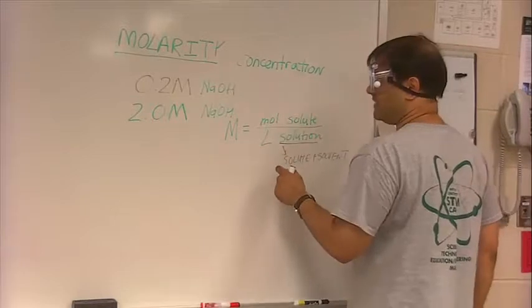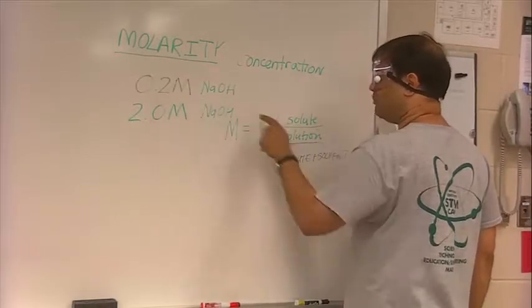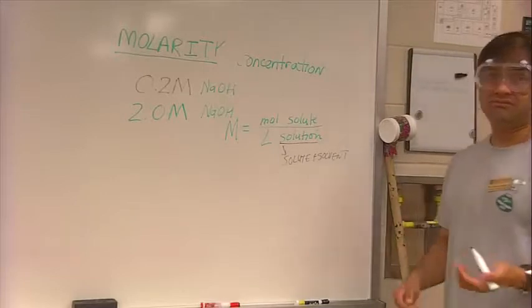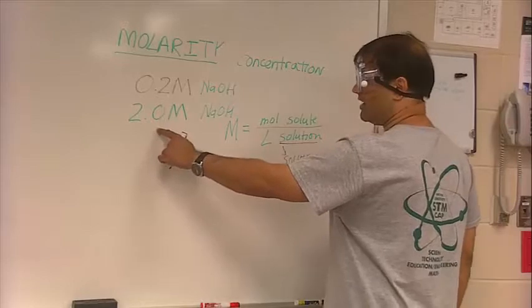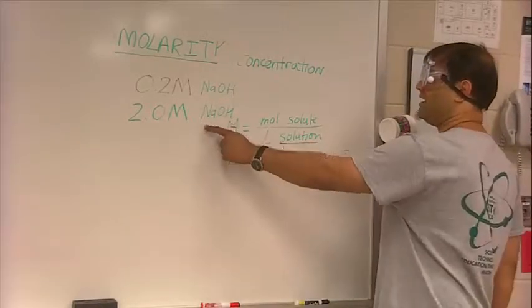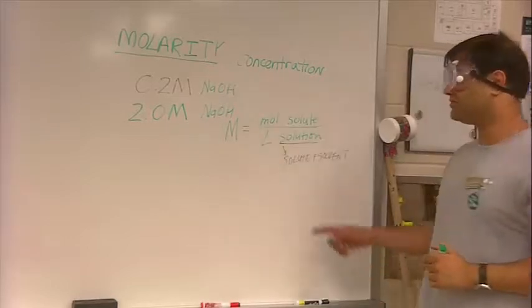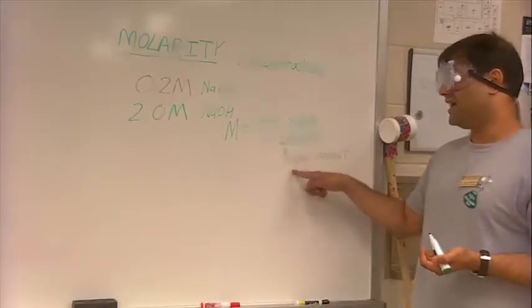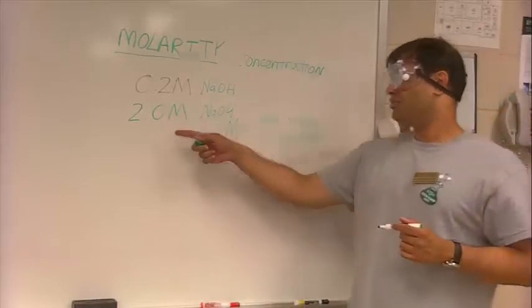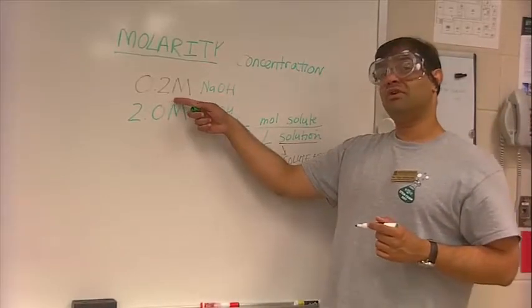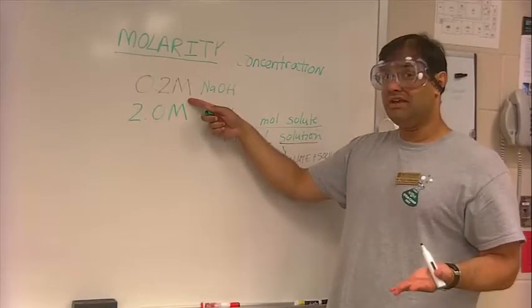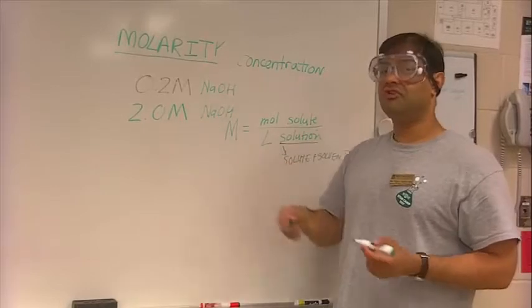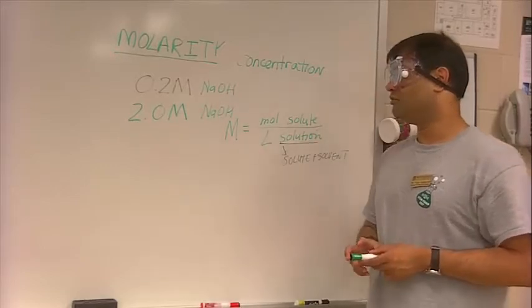But they have the same meaning. This will be 0.2 moles of NaOH per liter of solution, which is NaOH plus water. This would be 2 molar NaOH, 2 moles of NaOH per liter of solution, which contains NaOH plus water. 2 molar is more concentrated than 0.2 molar. The flip side, you can say 0.2 molar is diluted, a diluted version of 2 molar. That is, I took 2 molar, added some water to dilute it to get its concentration to 0.2 molar.